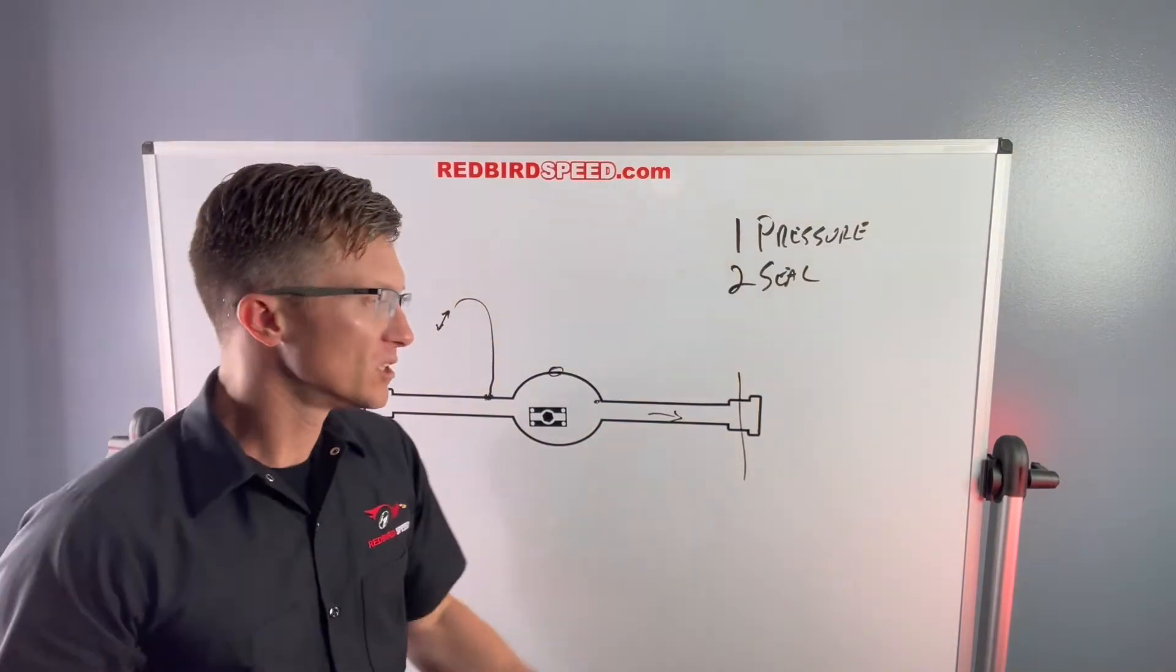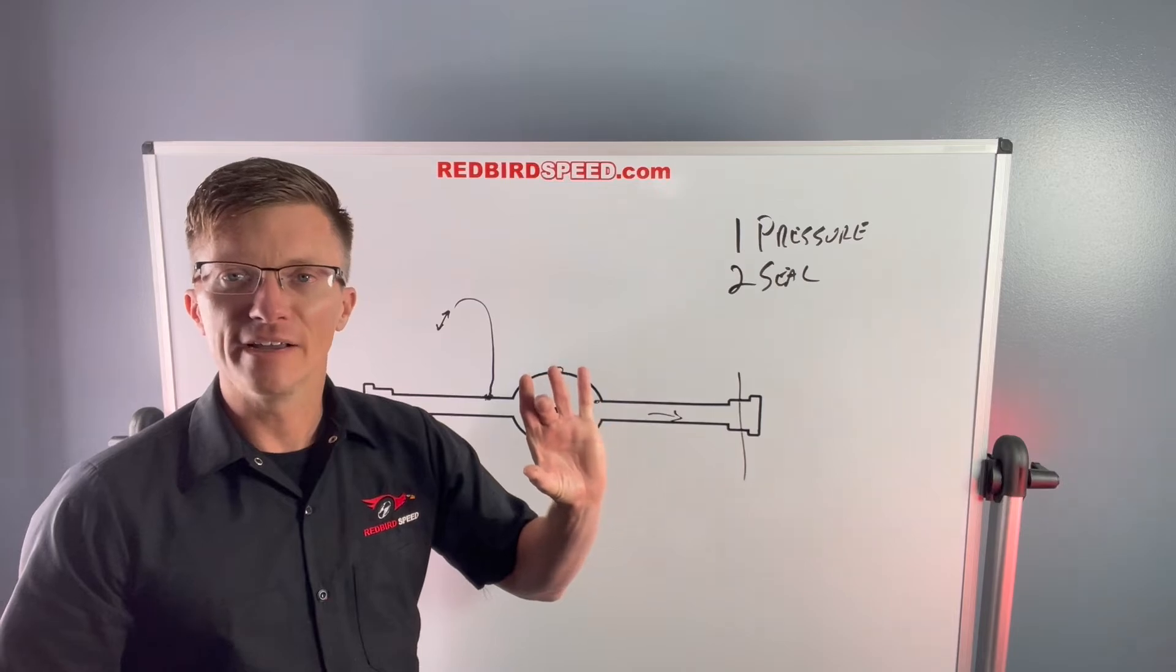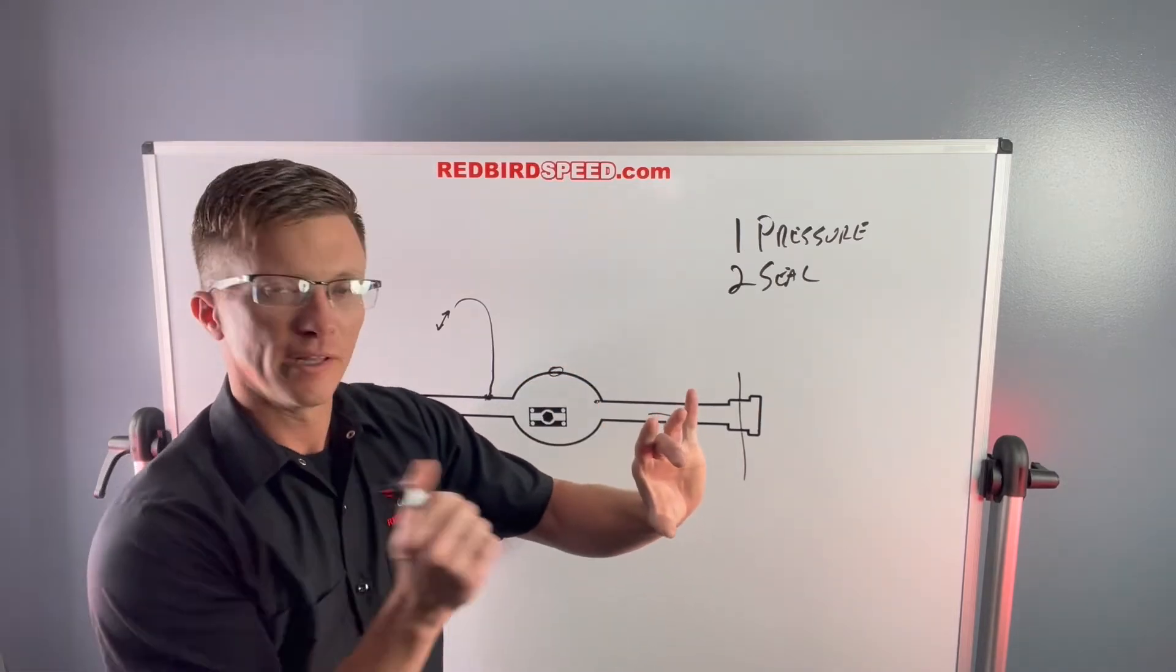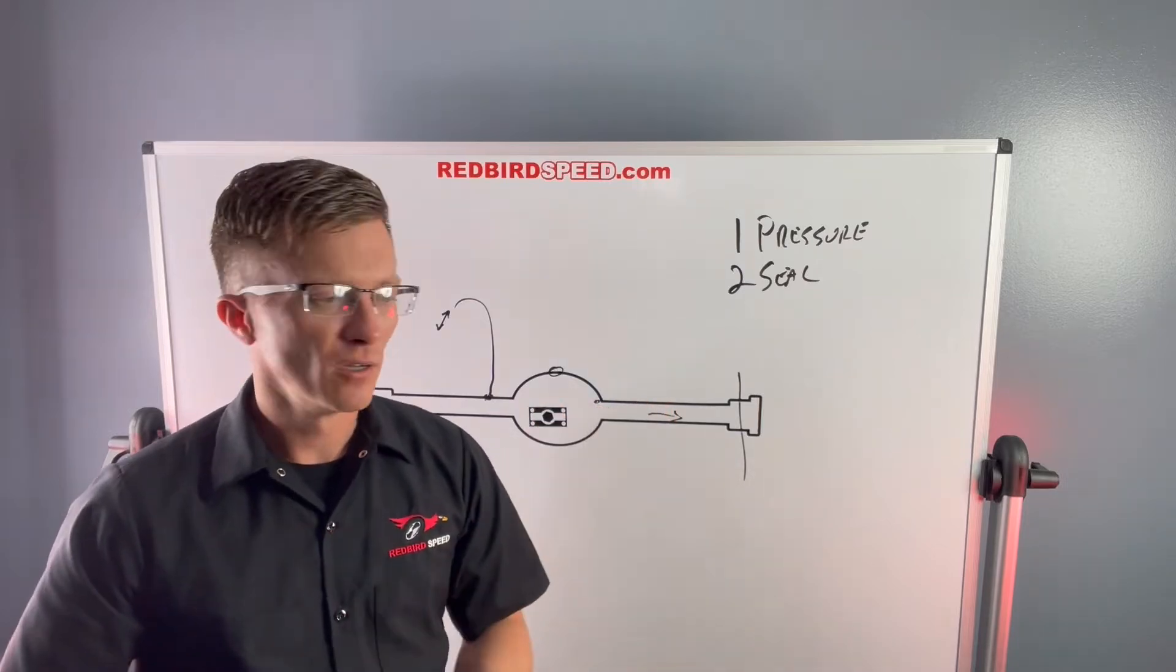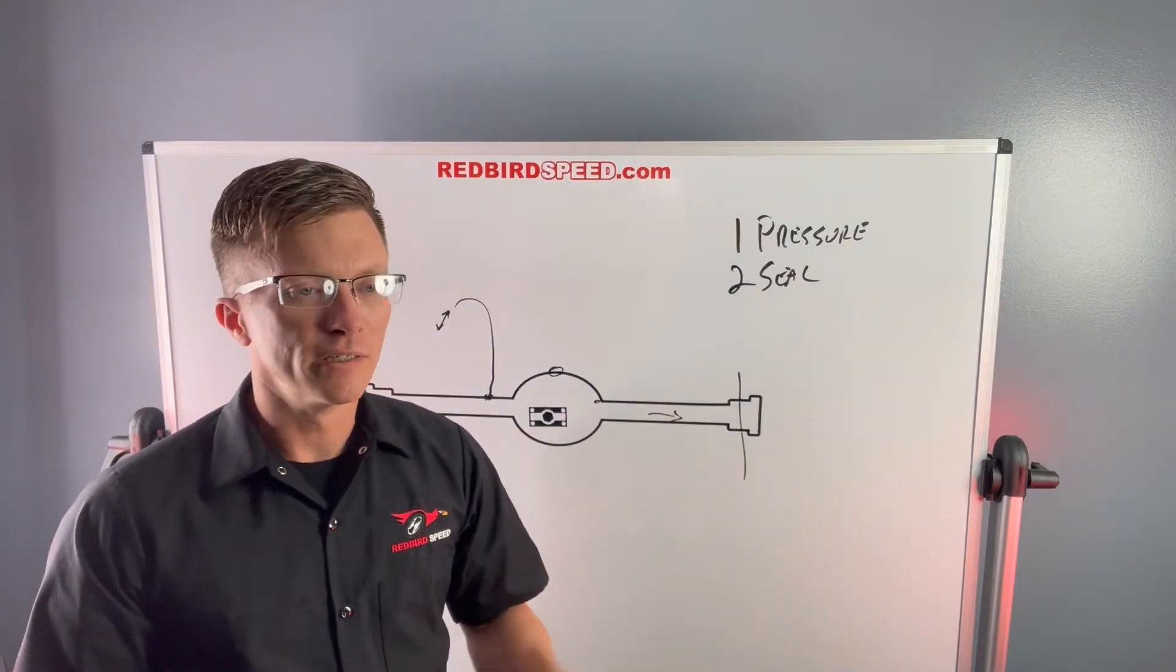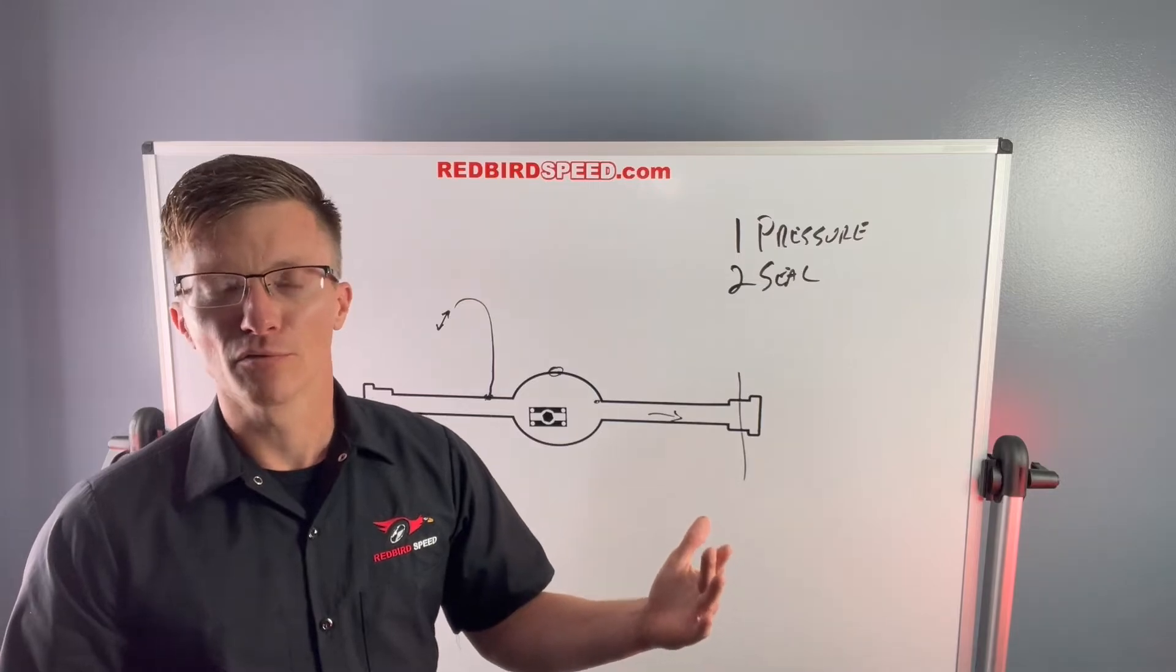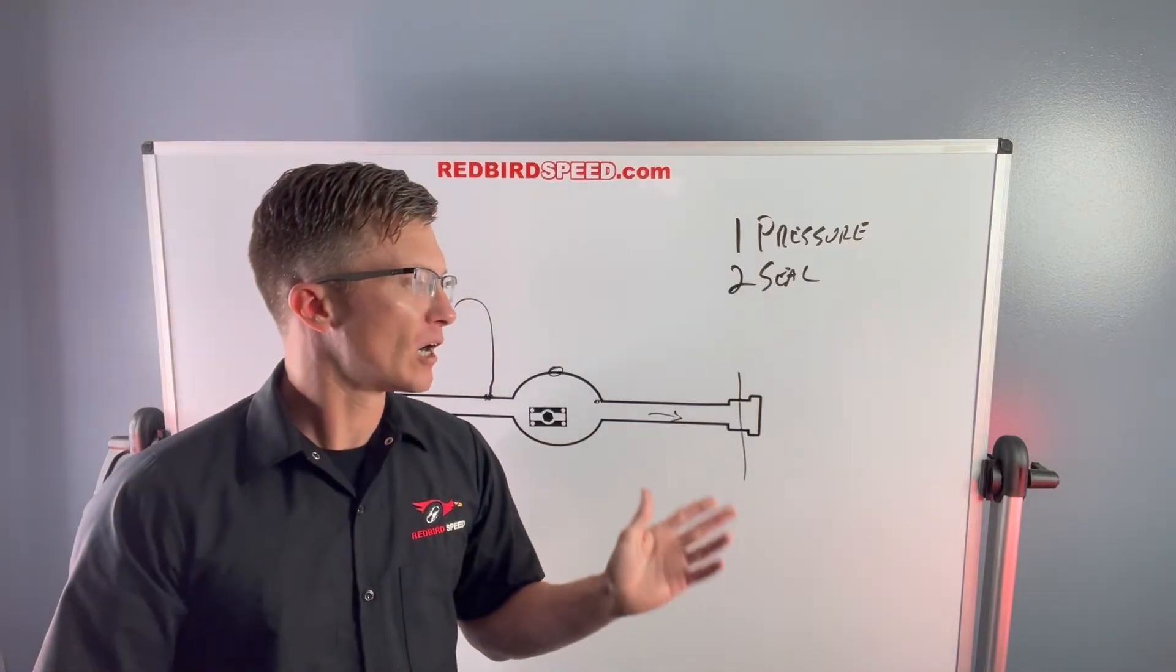So some of these axles have an inner seal provision where you slide a seal in, tap it with a seal installer down to a provision where it stops and you slide the axle in. Seal surface on the axle keeps it from leaking. That's an extremely common option.